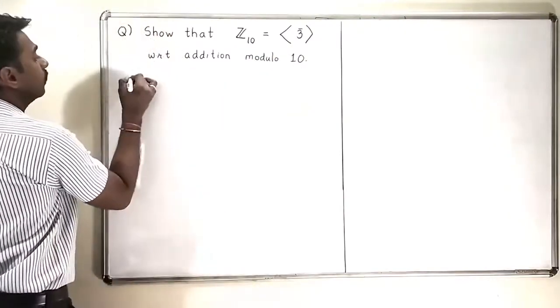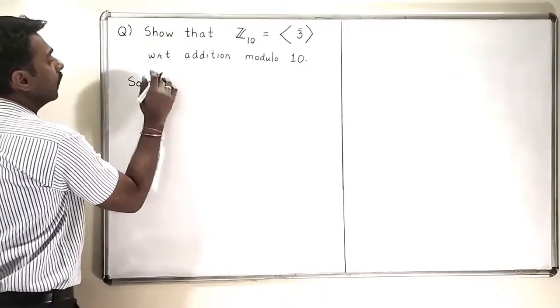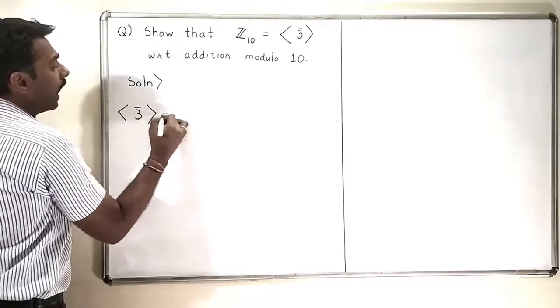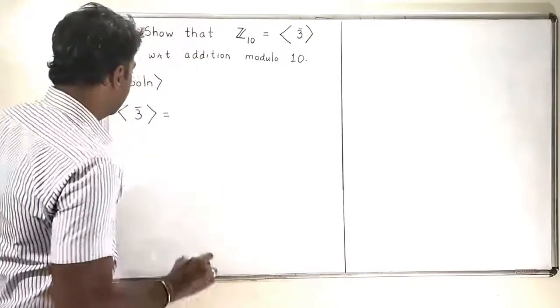So how will I do this now? This is very easy. We will calculate the cyclic subgroup generated by 3 bar and show that it is again equal to Z₁₀.